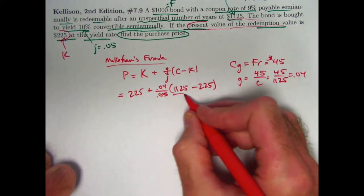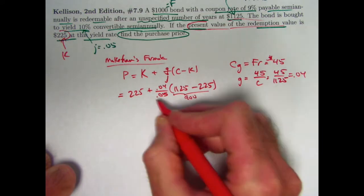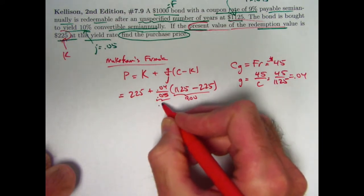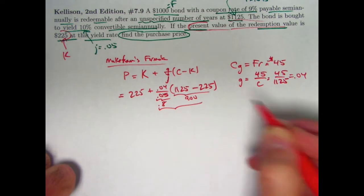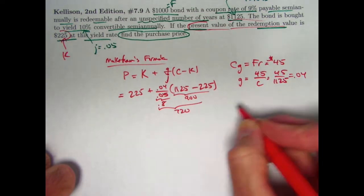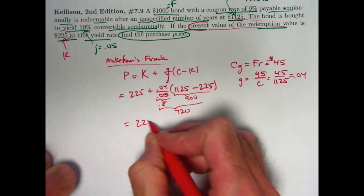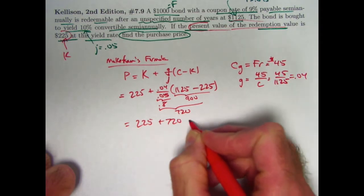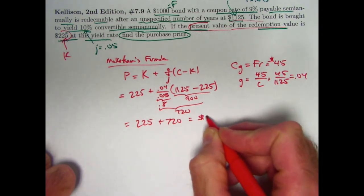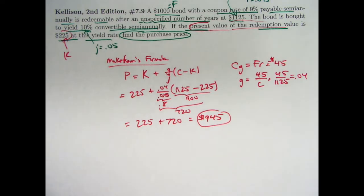We can do this all in our head here. 1125 minus 225 is going to be 900. 0.04 divided by 0.05 is 0.8. 0.8 times 900 is 720. We get 225 plus $720. That'll be $945. And that is the correct purchase price.